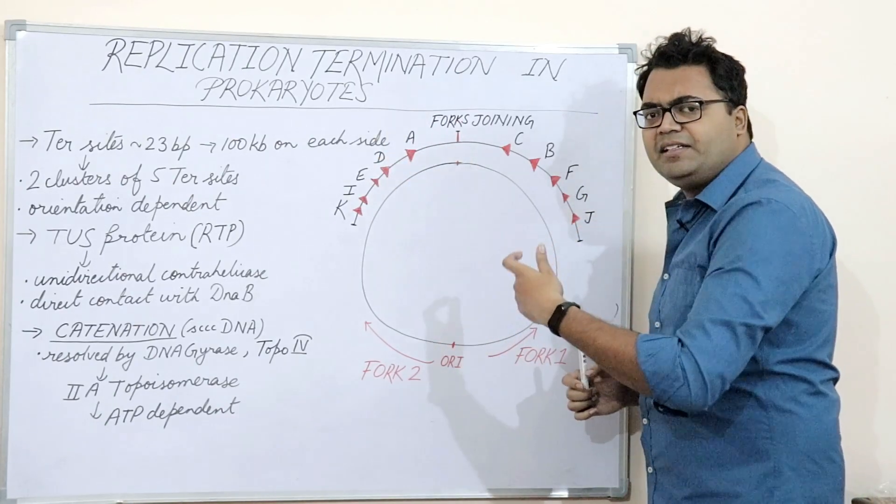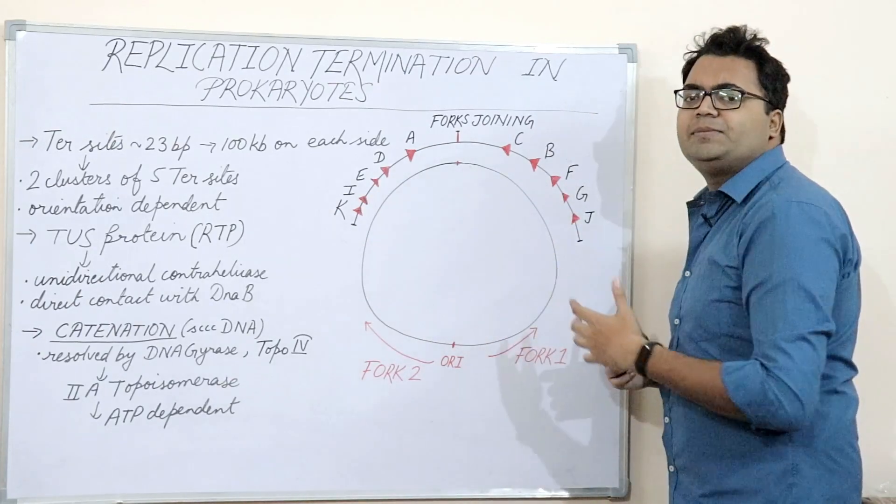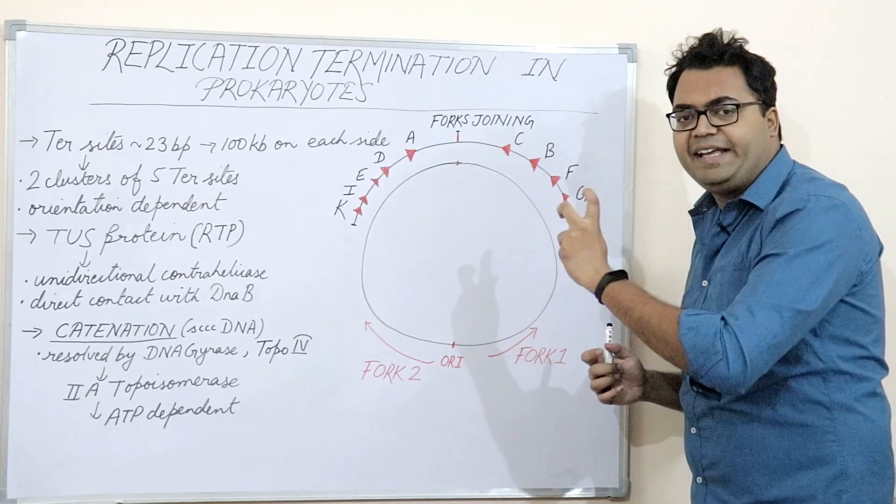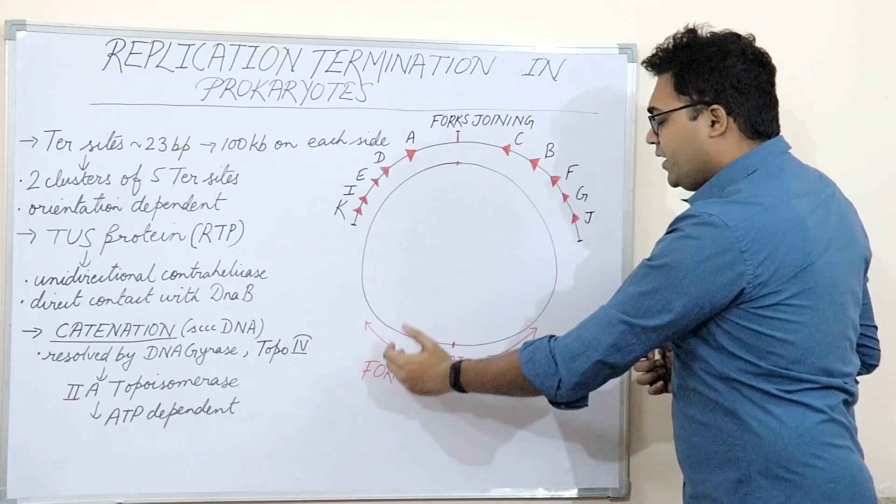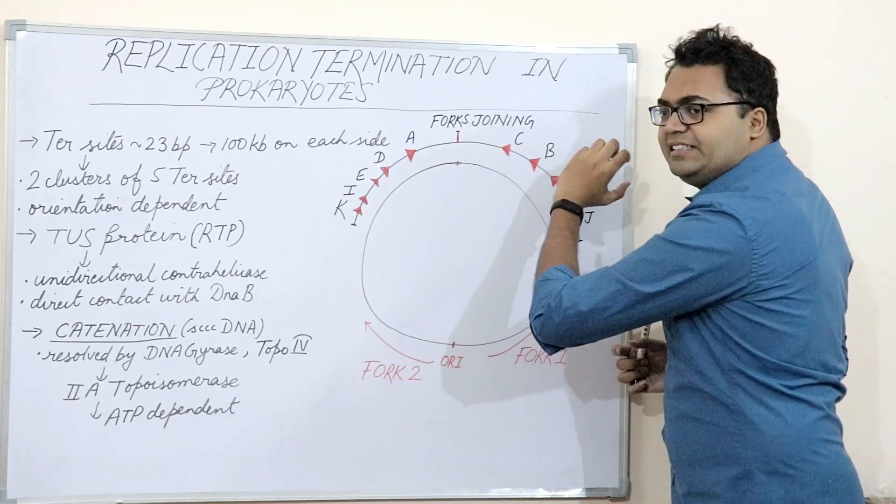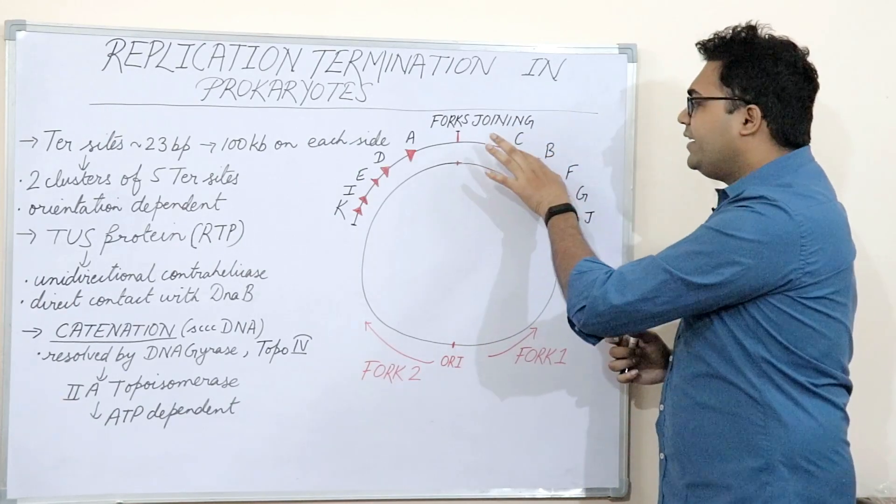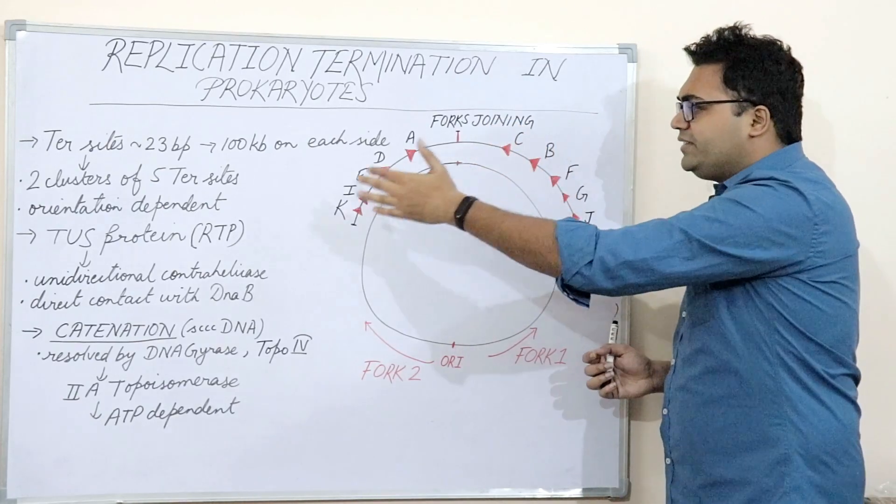And now how does the termination really take place via molecular mechanism? Something known as TUS protein, known as termination utilization sequence protein. It is a specific helicase protein which is a unidirectional contra helicase force, meaning that after a specific replication fork gets stalled, gets seized at a specific non-permissible termination site, it gets recruited.